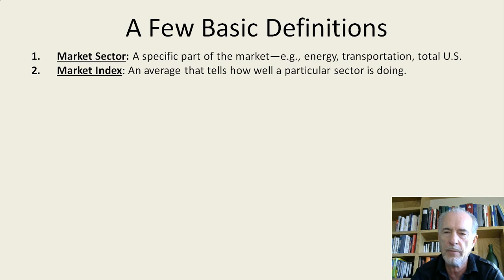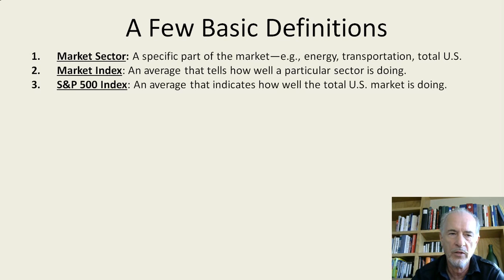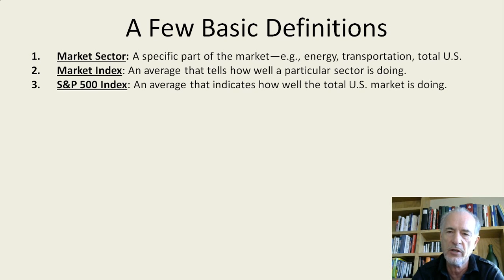Sometimes one sector will go up and do well, while at the same time another sector may go down. One of the most well-known indices is the S&P 500 index, which is an average that indicates how well the total U.S. market is doing. The S&P 500 tends to focus a little bit more on larger companies, and there are other indices which include a larger number of smaller companies. But it's a good one to be aware of and a good index to tell how well the total market is doing.